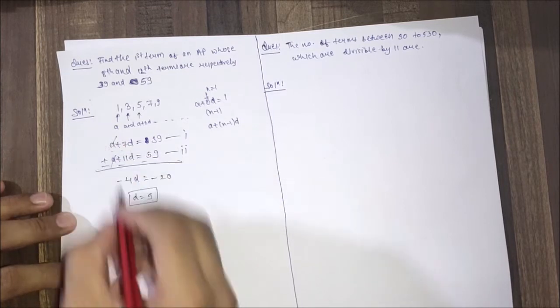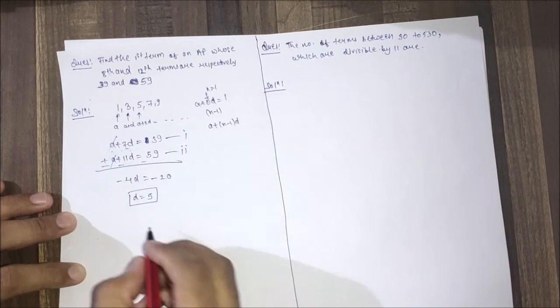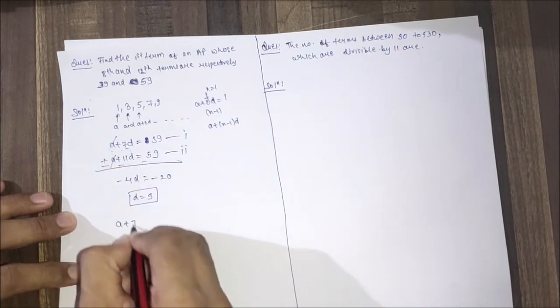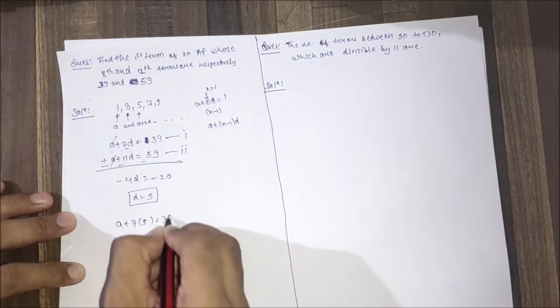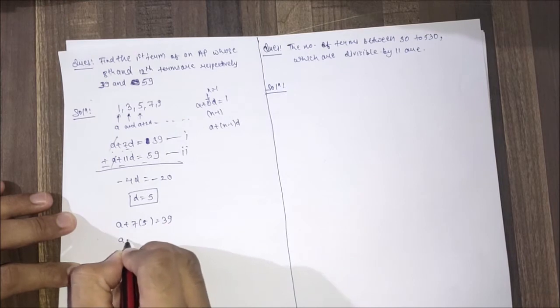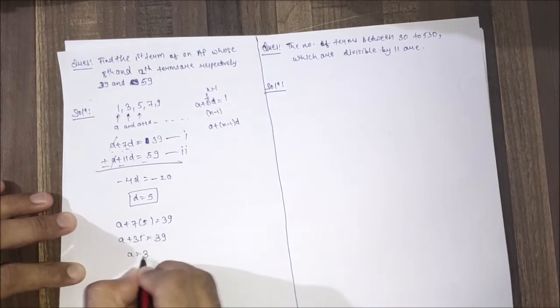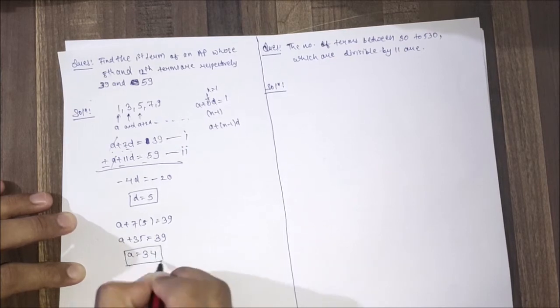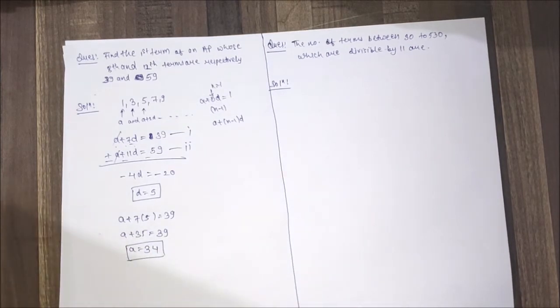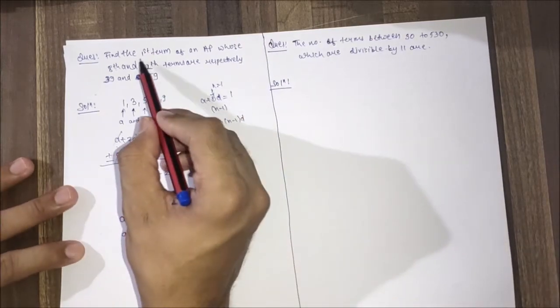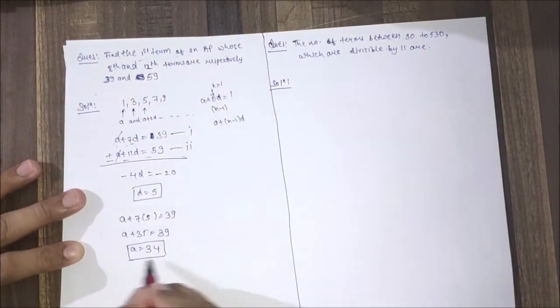Let's put this in the equation so we can find out a. a+7×5=39, so a+35=39, therefore a=4. And we know that a represents the first term of an AP, so this question is solved because we have to find the first term and we solved it here.